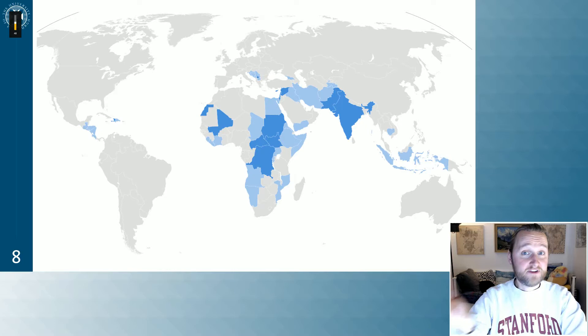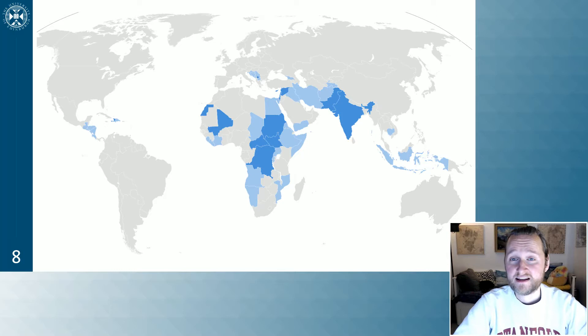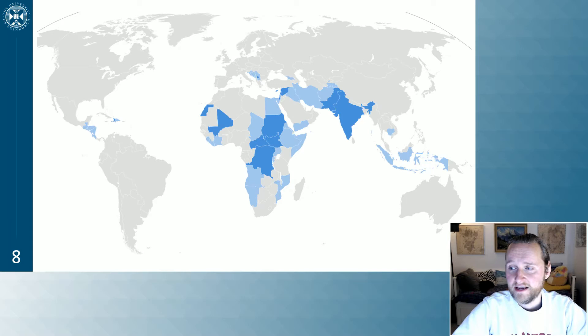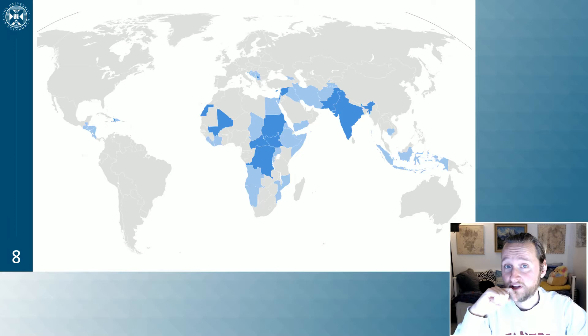Where does UN peacekeeping happen? Looking at a world map, dark blue countries currently have a UN peacekeeping mission, while light blue countries have previously had one. Most UN peacekeeping has really happened in Africa, the Middle East, and South Asia. There have been a few missions in Oceania, Latin America, and the Caribbean. There has been one mission in Europe with the conflict in the former Yugoslavia. The picture of peacekeeping is very much one of the global south — it mostly involves developing countries, with very few exceptions.